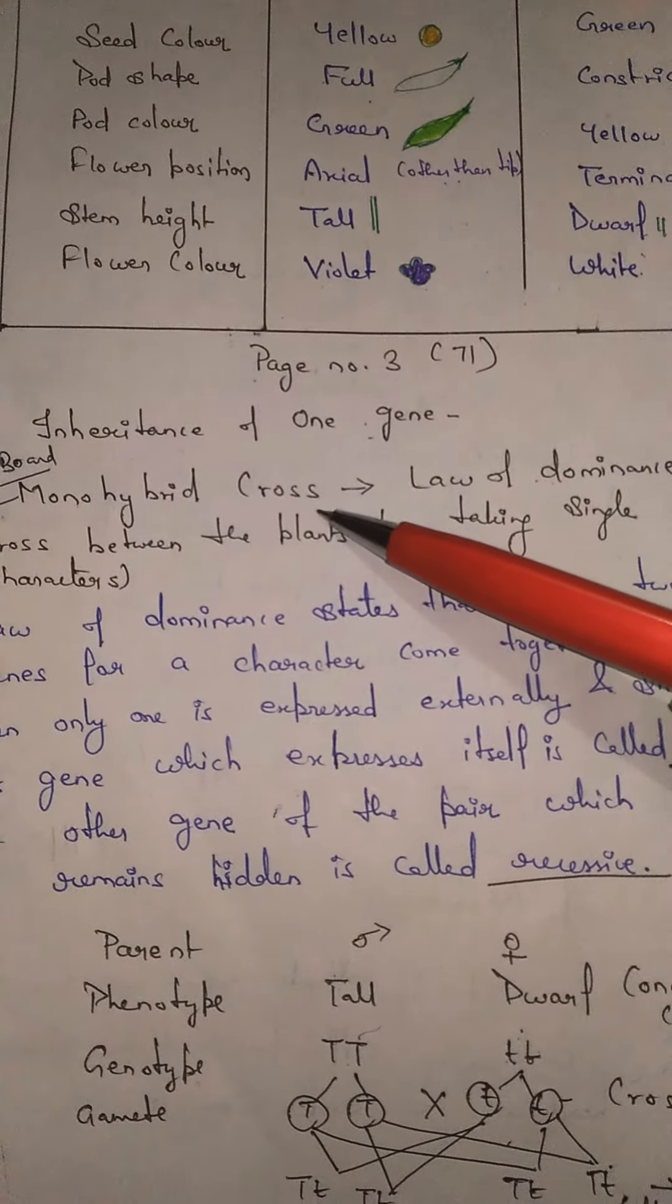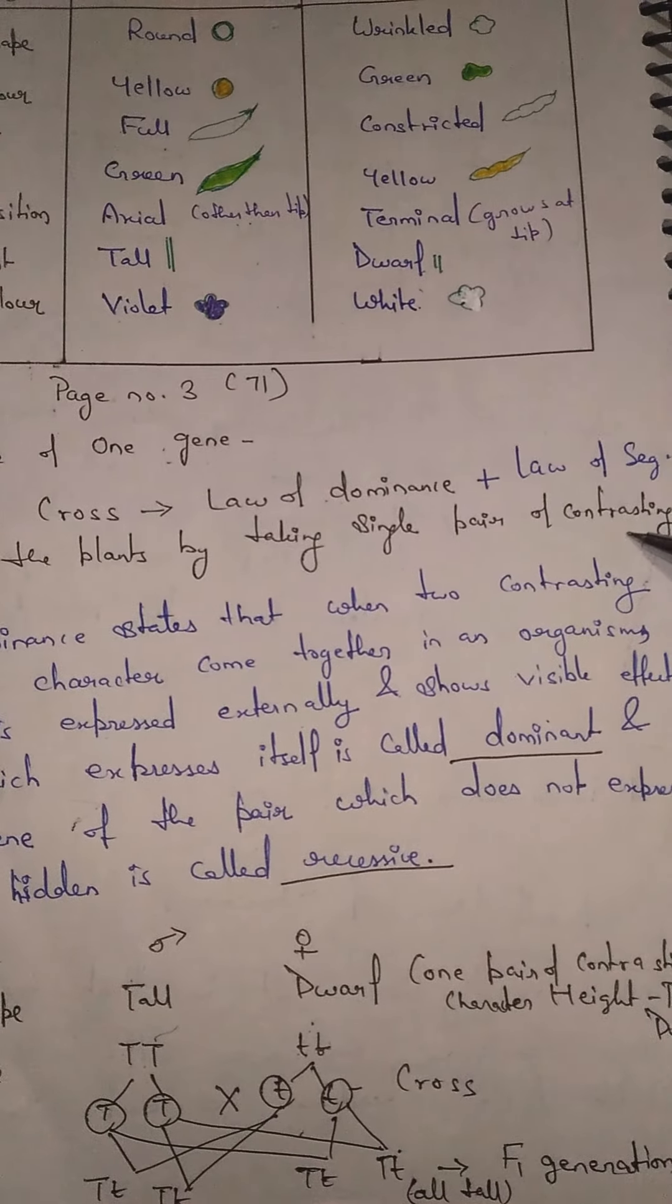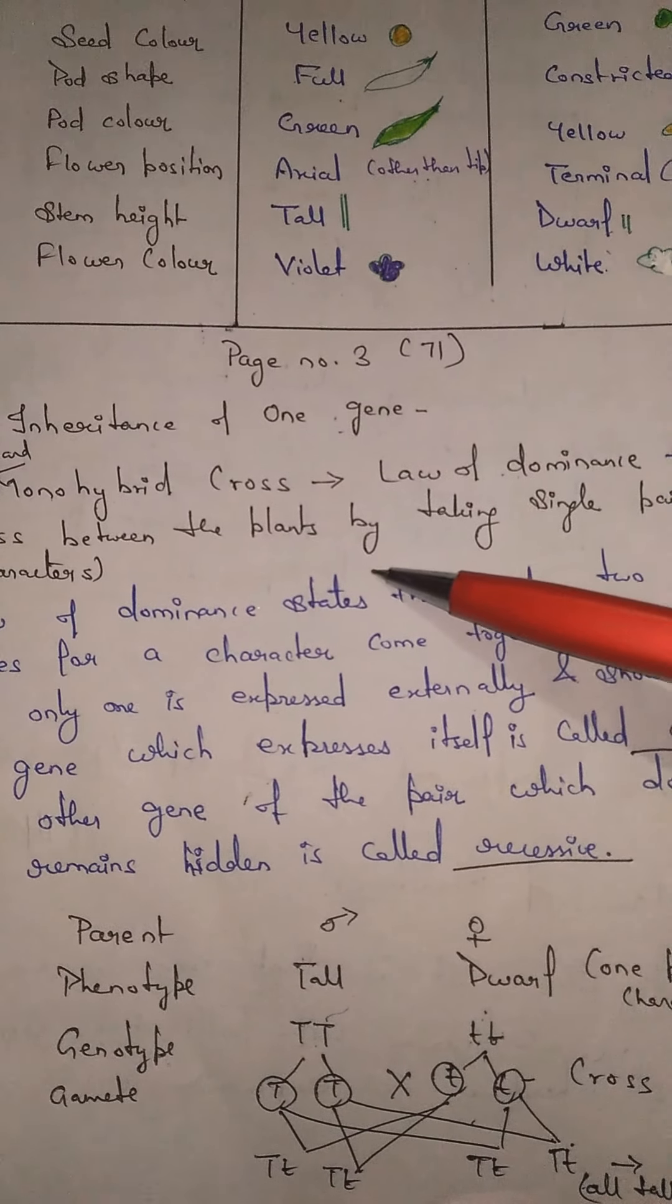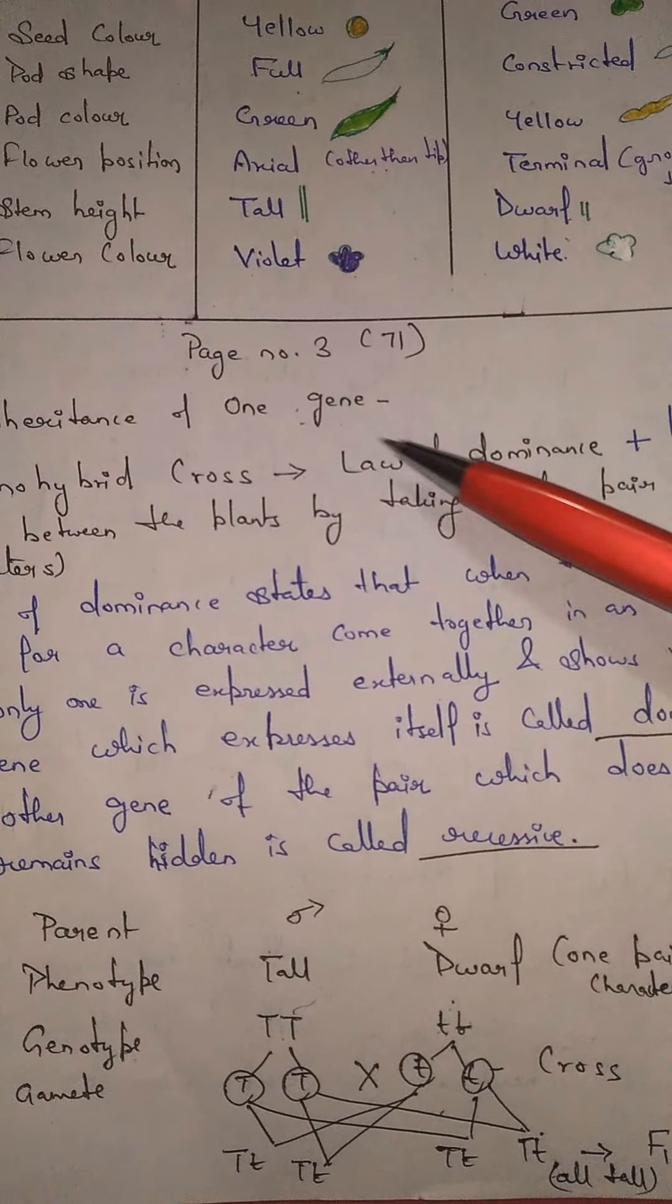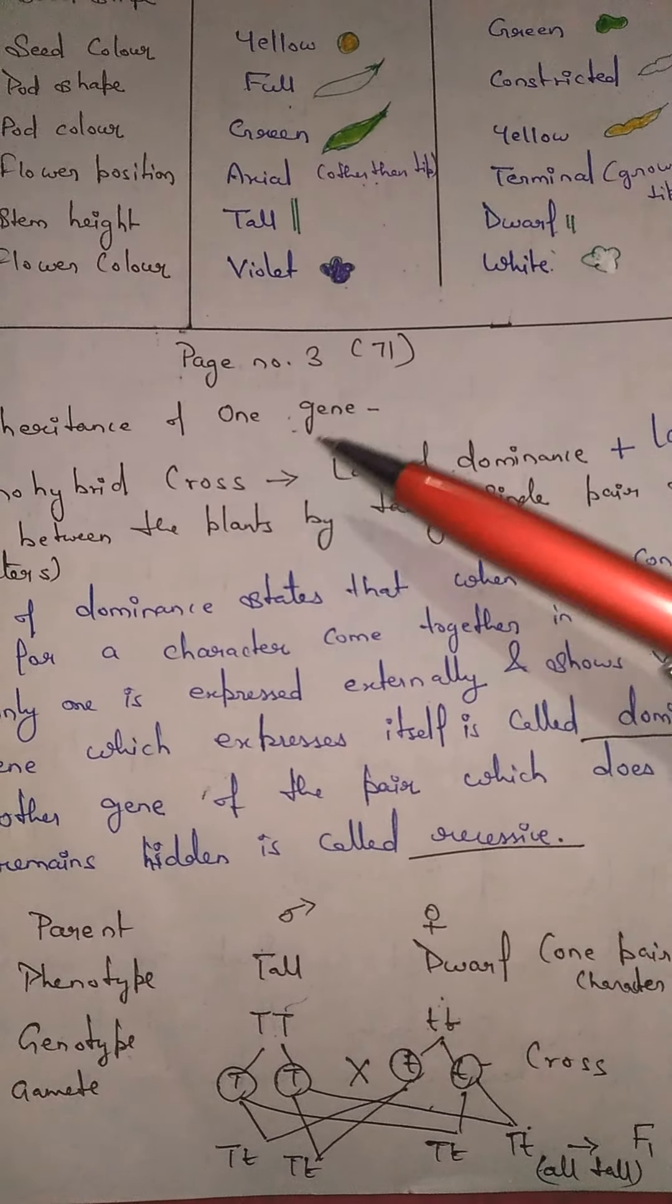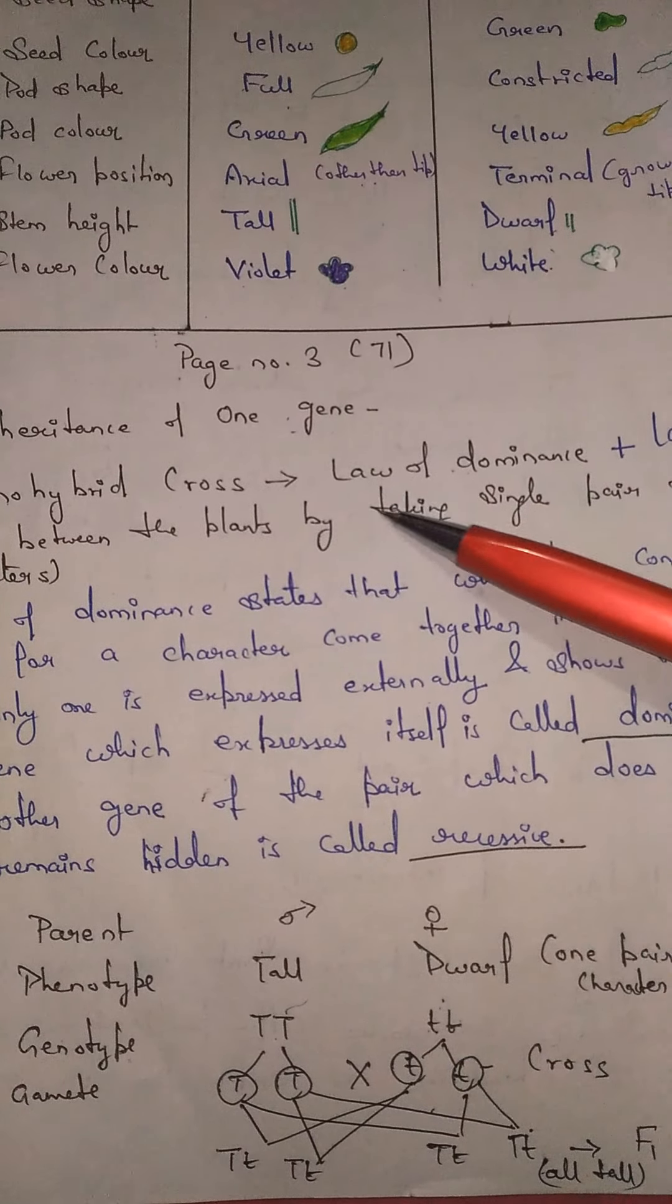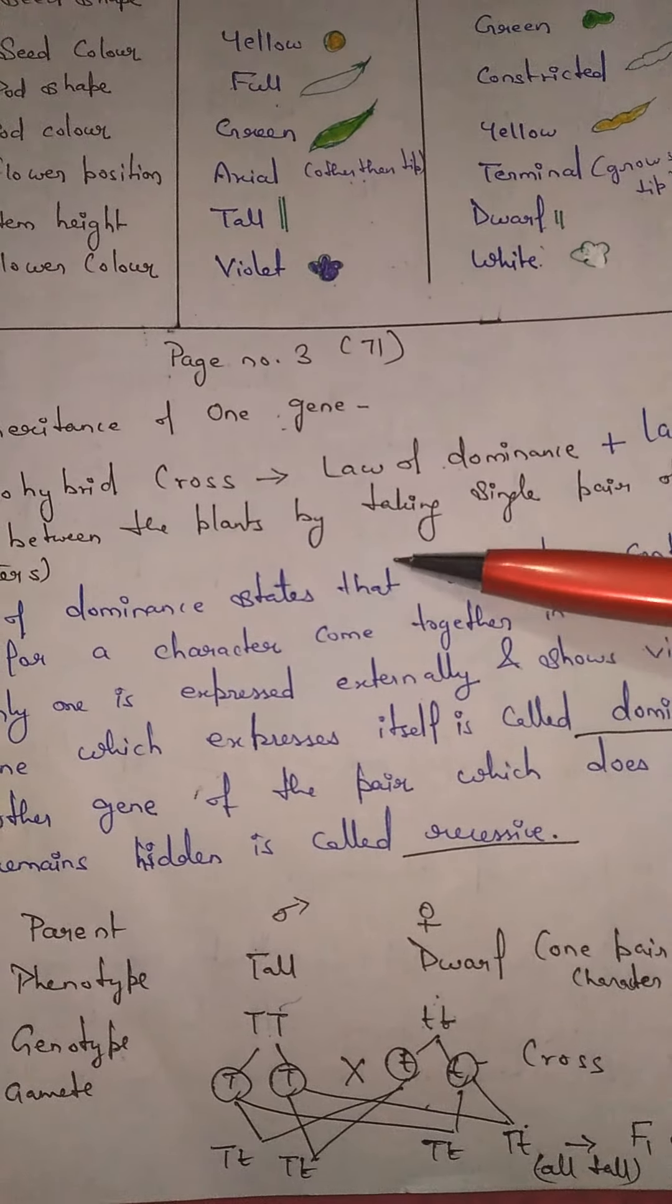Monohybrid cross means cross between the plants by taking a single pair of contrasting characters. I have given you an example that we have to take the height. In contrasting, the character either height could be tall or the height could be dwarf.